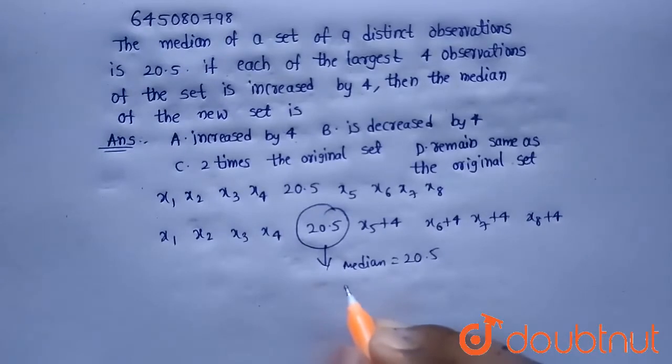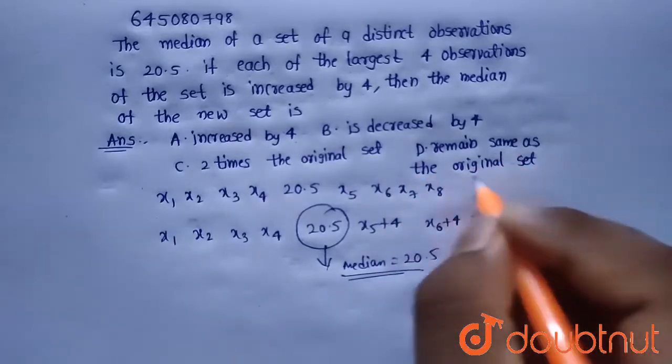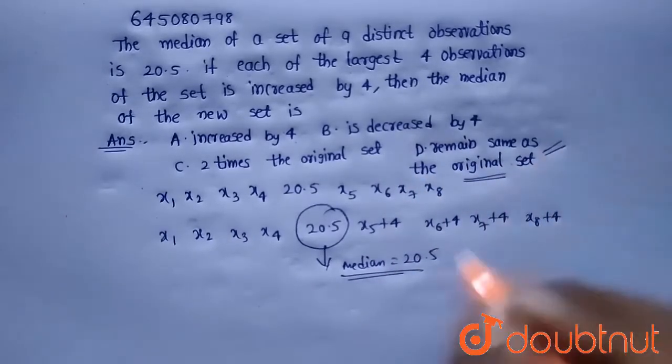So after increasing the largest observation by 4, the median doesn't change. So the median will remain same as the original set which is option D, so option D is the answer.